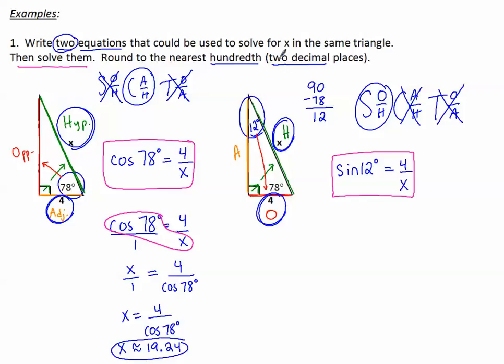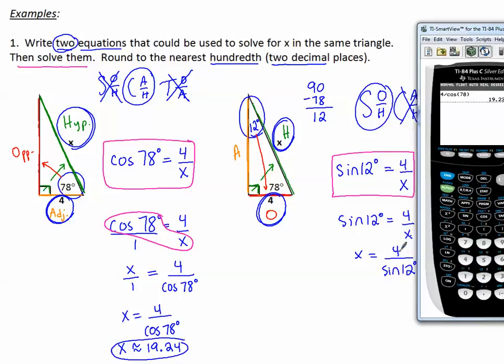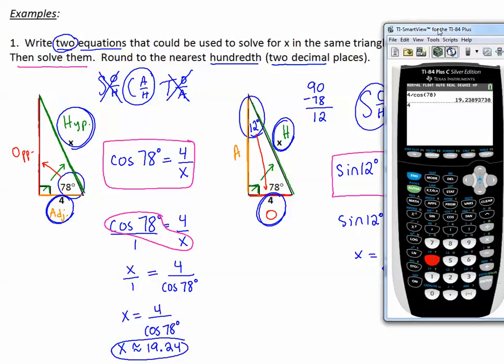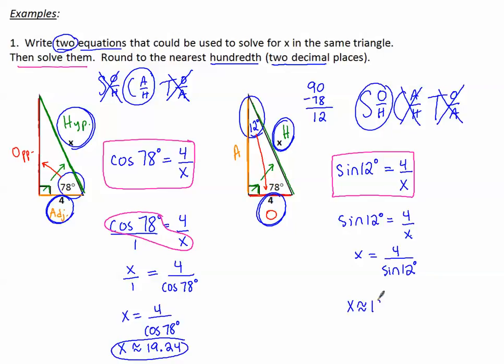Now be careful, because it won't always say how many decimal places. It might use the word hundredths, or tenths, or thousandths. You have to know what that means. Let's try this one. Sine of 12 degrees equals 4 over x. Let's switch the places when x is in the denominator, so that we are dividing by the trig ratio. Now we go to our calculator and type in 4 divided by sine of 12. 4, I'm going to have to scoot this over, divided by sine of 12, close parentheses, enter. Notice we get the exact same thing, because we were given the same problem, we just chose to look from a different angle. So again, I can write x is approximately 19.24. Make sense?